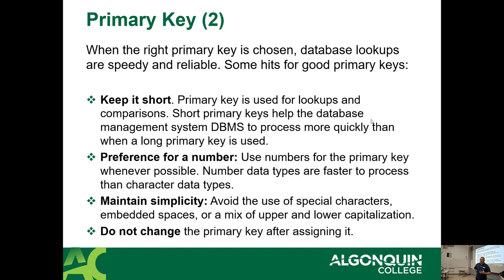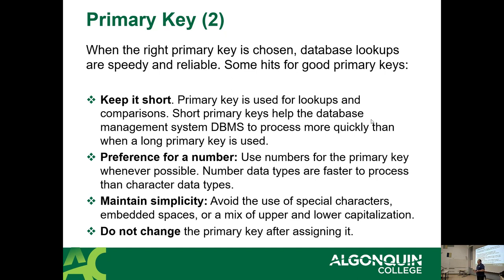When a primary key is chosen, database lookups are fast and reliable if you did it right. Keep it short — the shorter the primary key, the faster the lookups. Ideally, use a number. When querying a database, searching on text is slower than searching against numbers. Later in the term I'll be talking about indexes and this will make way more sense then.